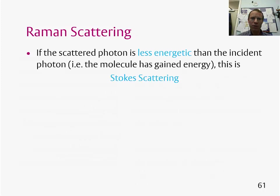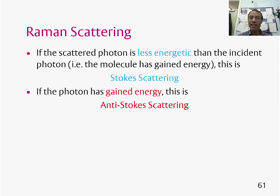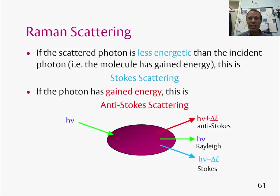Some terminology: if the scattered photon is less energetic than the incident photon, energy has been transferred from the light to the molecule — this is known as Stokes scattering. If the inverse happens, so the scattered photon is of higher energy than the incoming photon, the photon has gained energy from the molecule — this is called anti-Stokes scattering. As shown in the schematic, we therefore expect three branches in a Raman scattering spectrum: anti-Stokes, Rayleigh, and Stokes peaks.